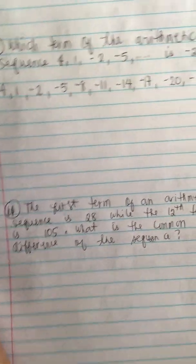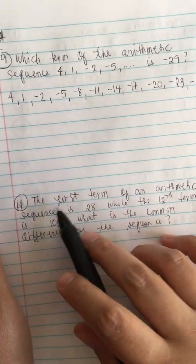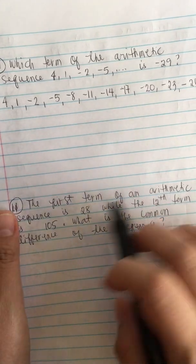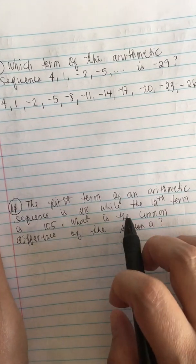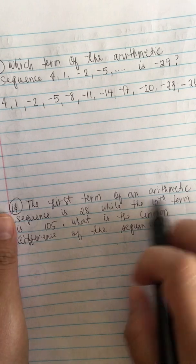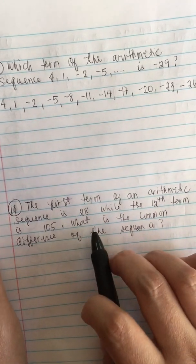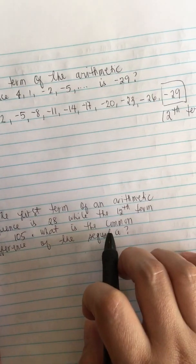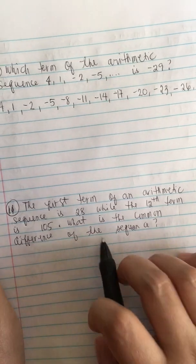Now this one is a similar problem. The first term of an arithmetic sequence is 28, while the 12th term is 105. So what is the common difference of the sequence?